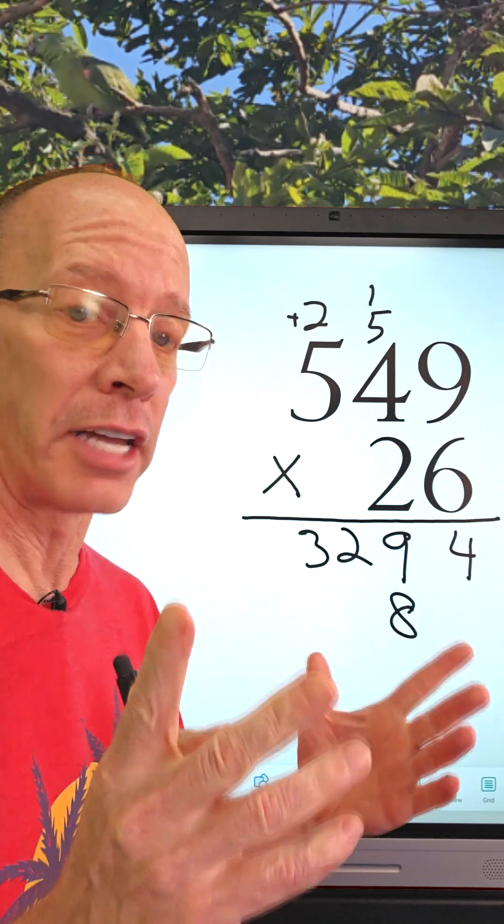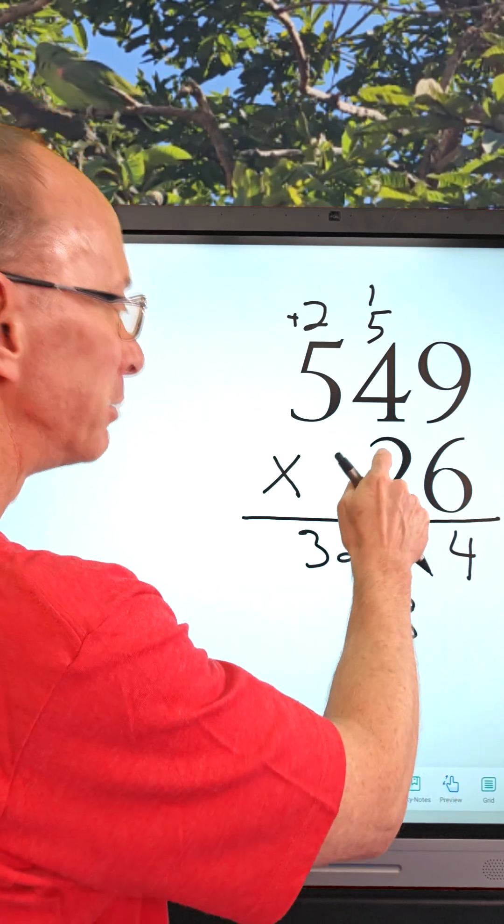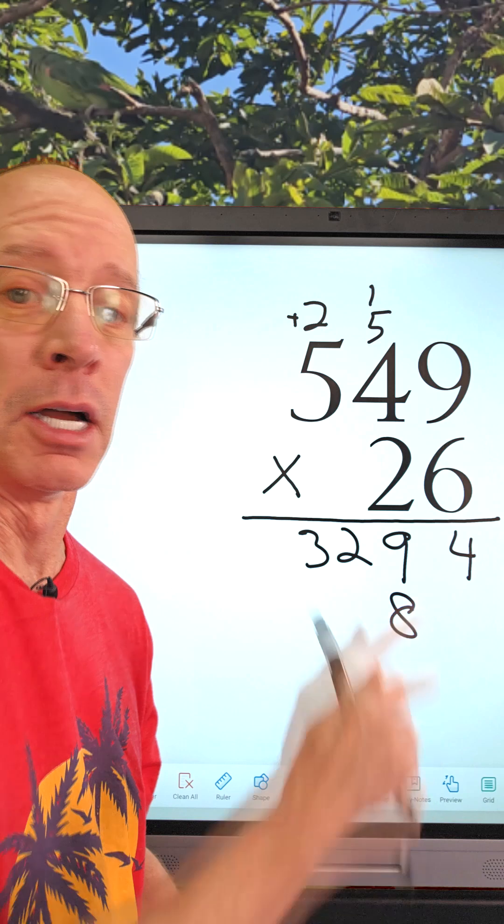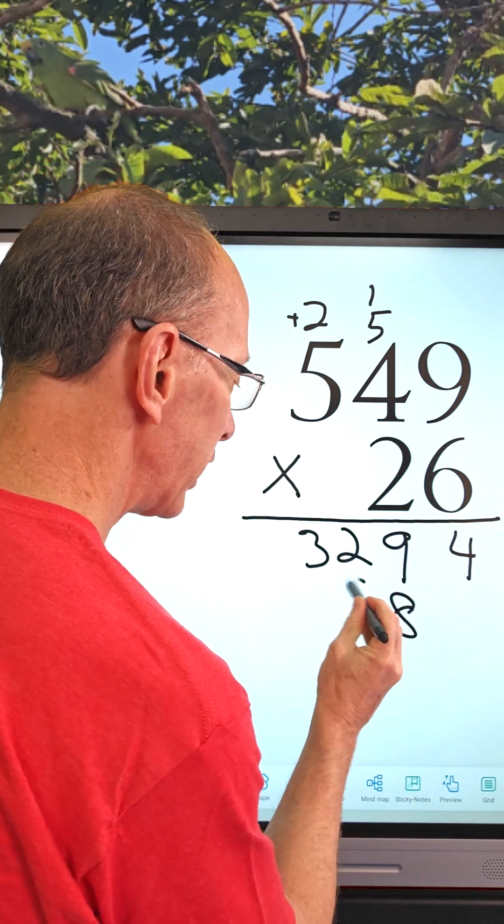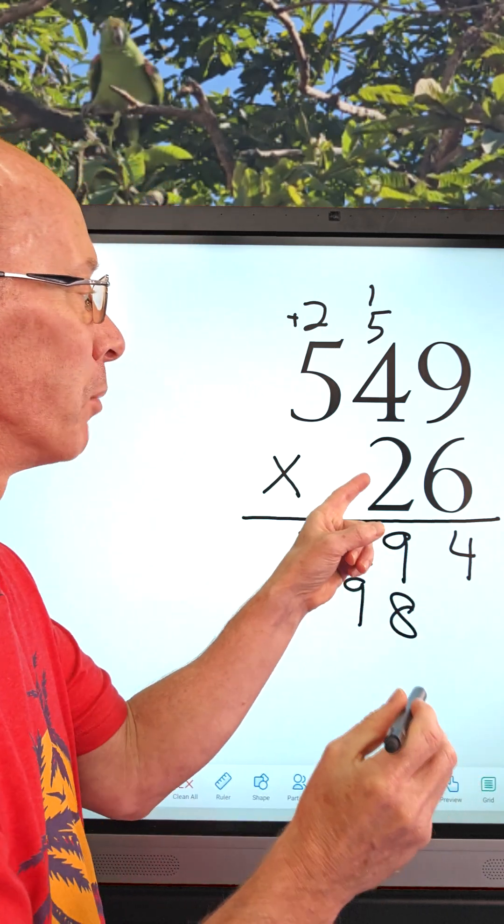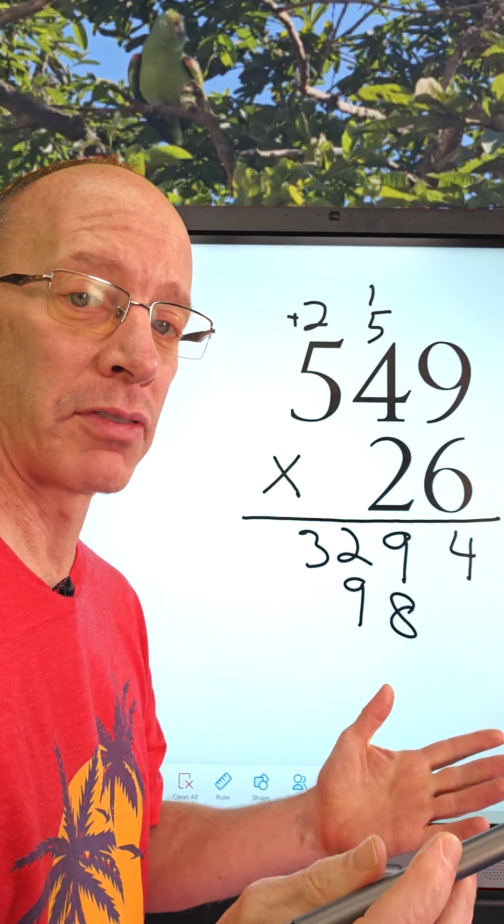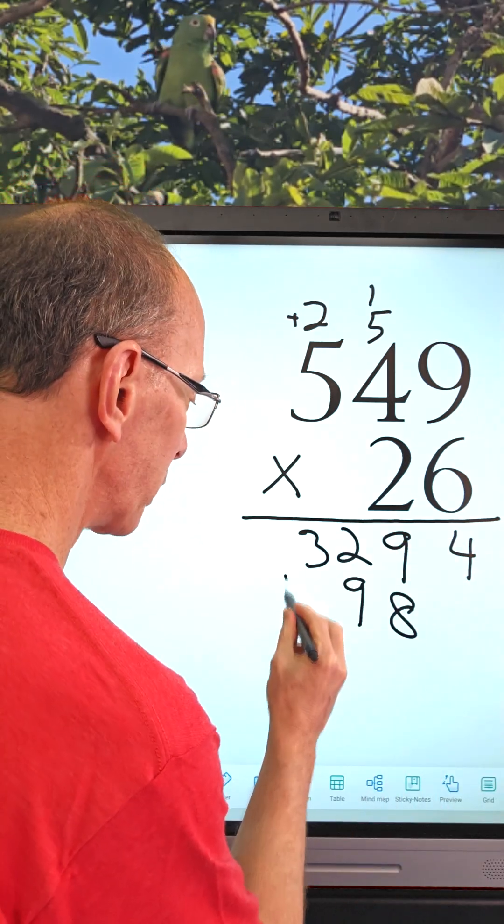So now I'm going to go ahead and multiply 2 times 4, which is 8, plus the 1 is 9. Put the 9 right there. Now we're going to go ahead and multiply 2 times 5. 2 times 5 is 10, right here. So we're going to go ahead and put 10.